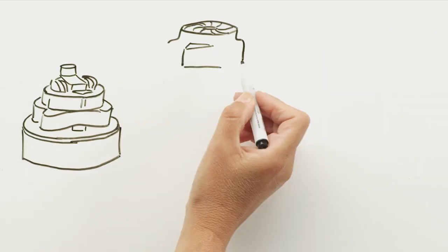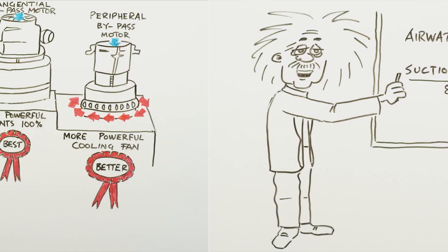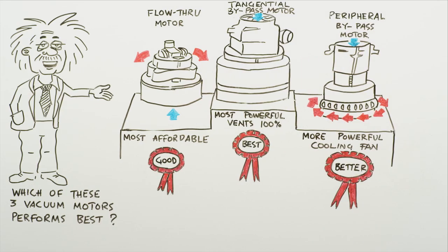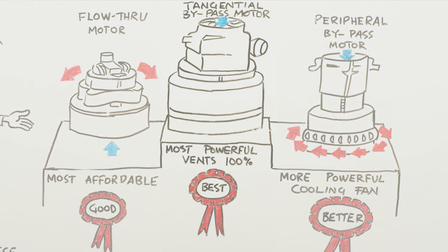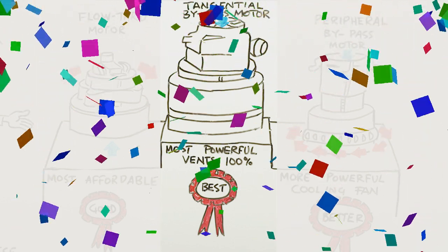So, now that we've told you all about vacuum cleaner performance, how it's measured, and the types of motors, let's go back to our original question. Which of these three vacuum cleaner motors do you think performs best? If you guessed this larger tangential bypass motor, you are correct! Congratulations!